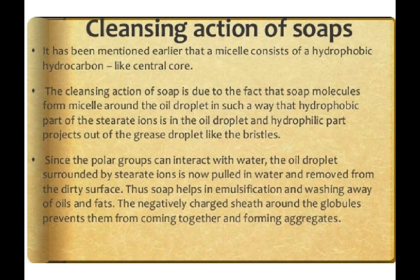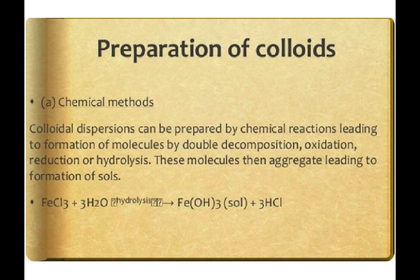Next is how we prepare colloids. We have different methods. First, chemical methods: colloidal dispersions are formed by chemical reactions — double decomposition, oxidation-reduction, or hydrolysis. Molecules aggregate to finally form sols. For example: FeCl₃ + 3H₂O undergoes hydrolysis to form Fe(OH)₃ sol and 3HCl.